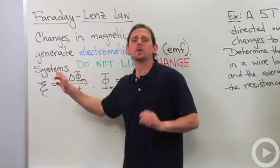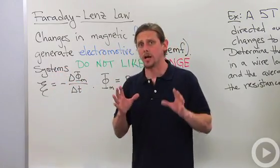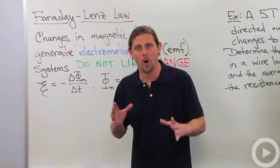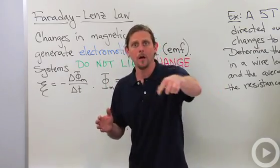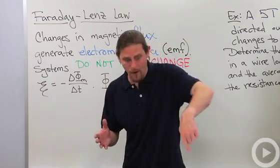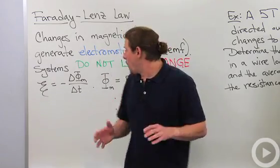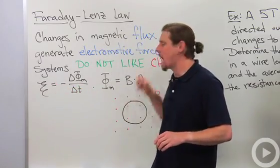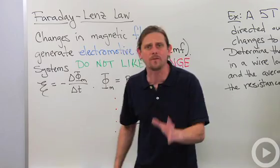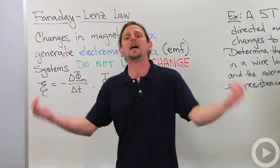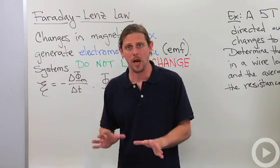So the way that it works is when I have a change in magnetic flux, I generate an electromotive force to run a current around. Now remember that when you've got a current, you generate a magnetic field. The way that the law works is that systems do not like change. So whenever the magnetic flux changes, the current is induced in such a direction as to minimize that change.